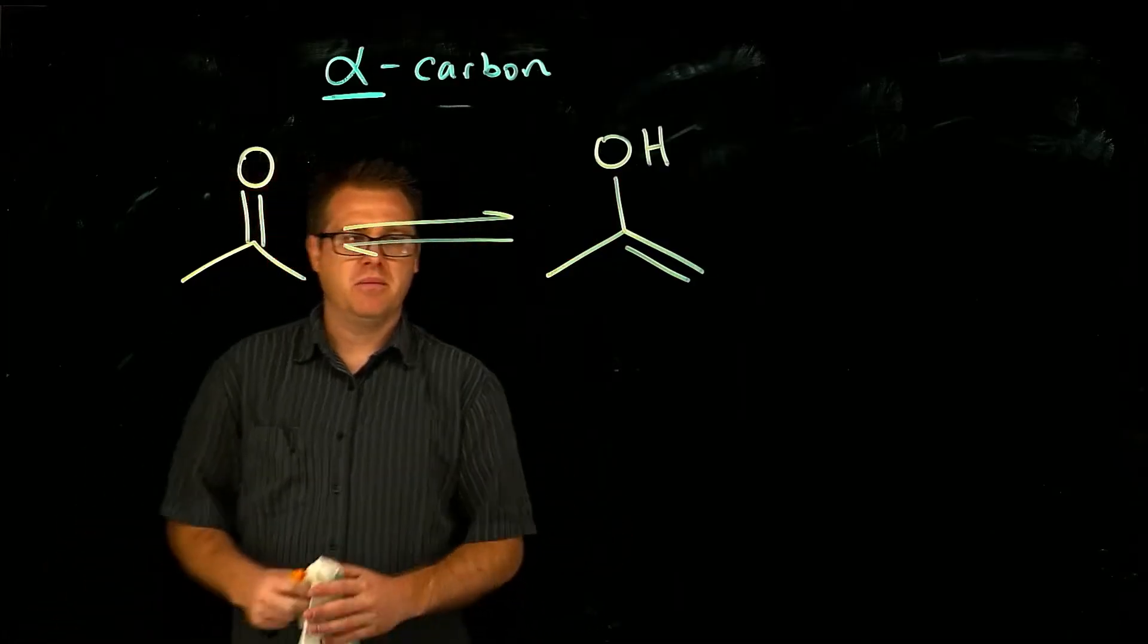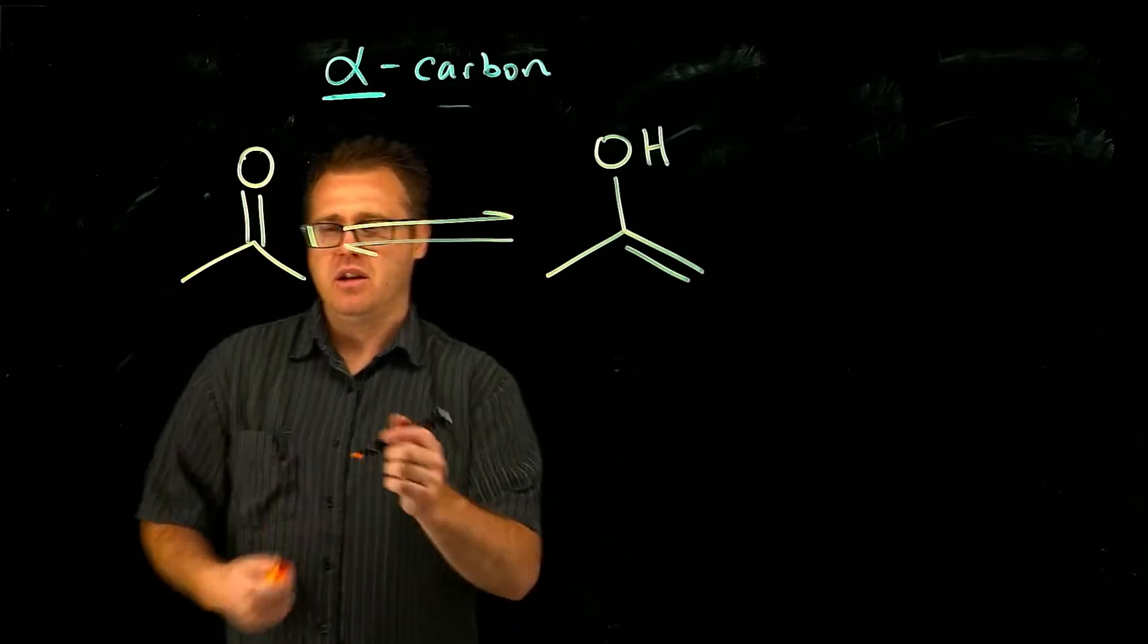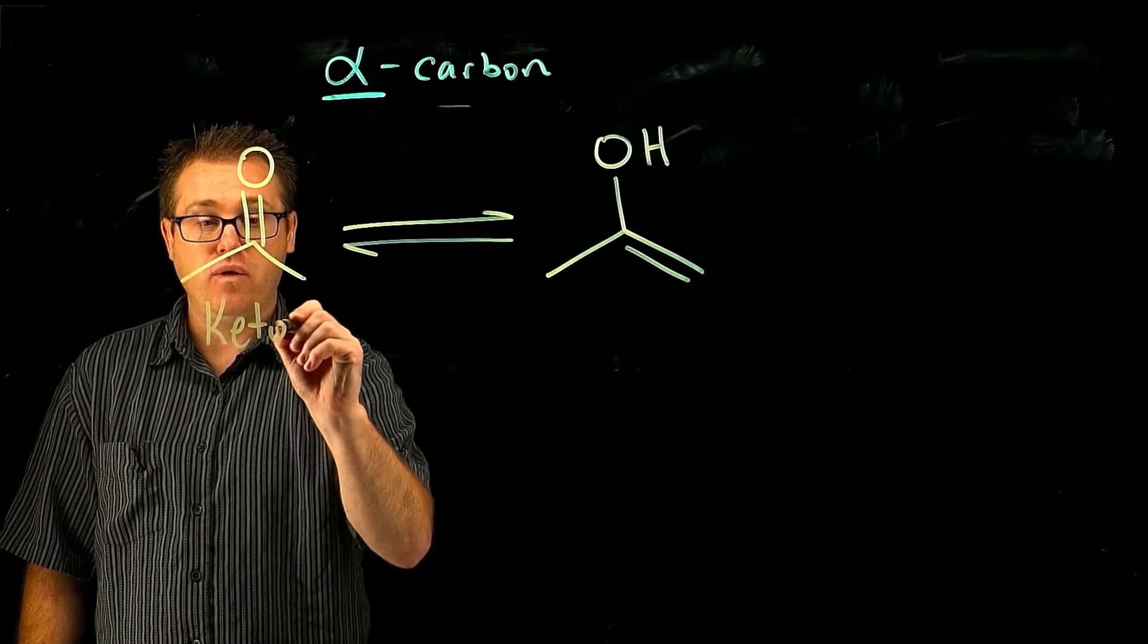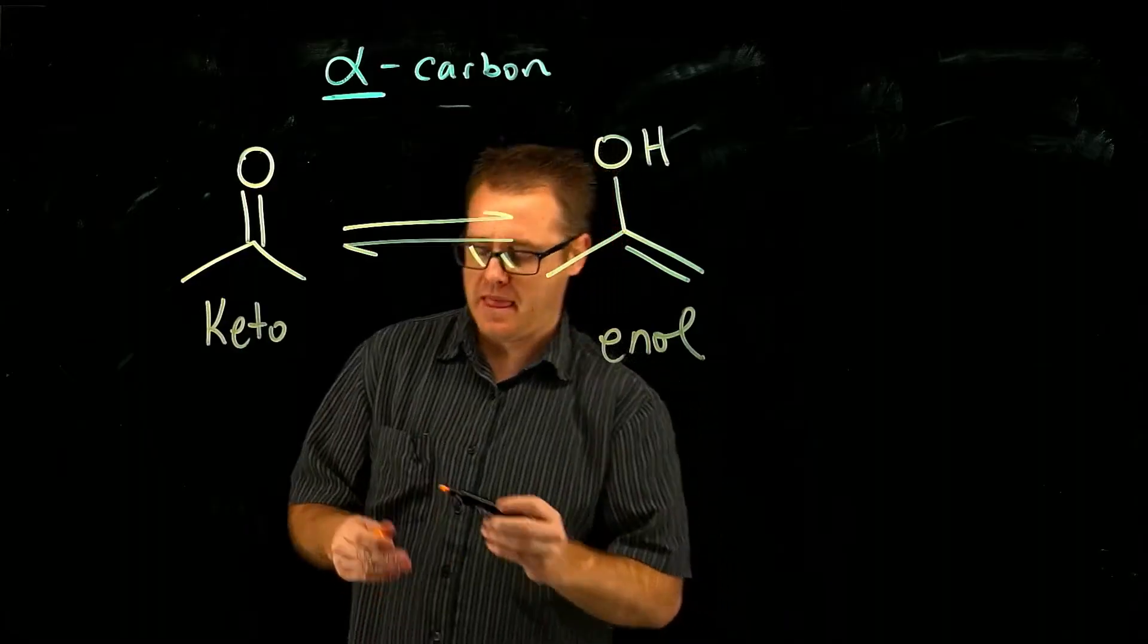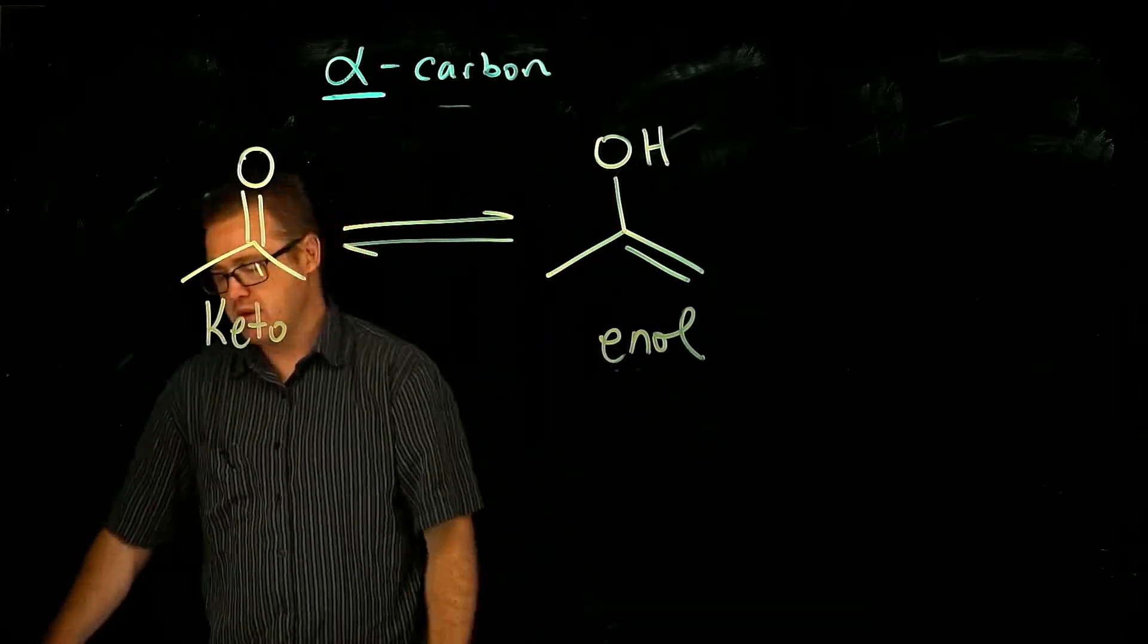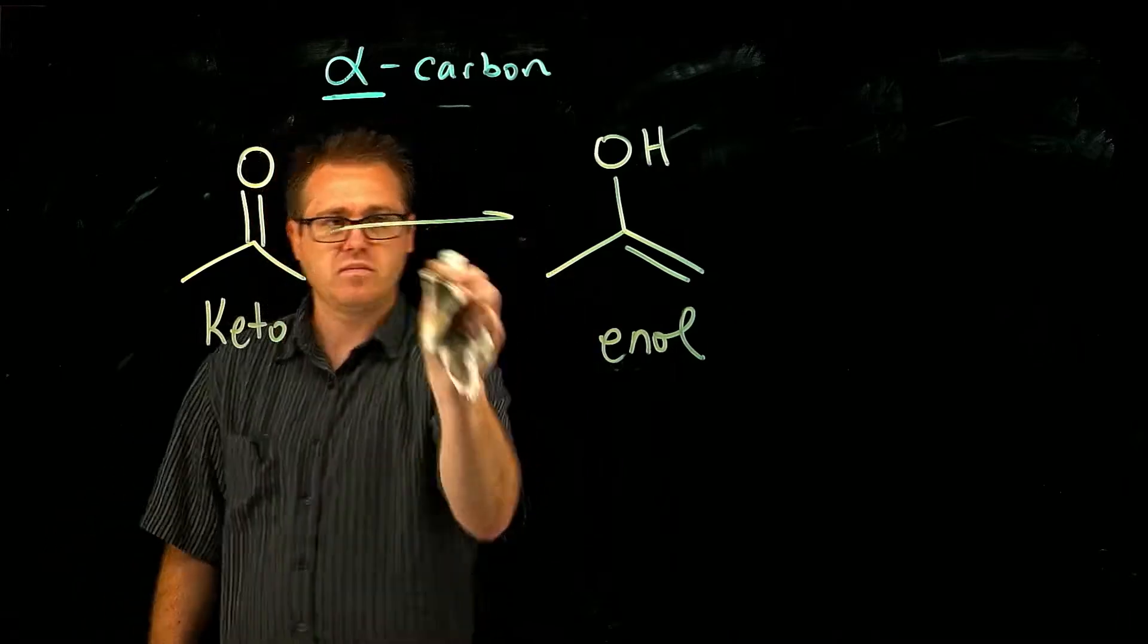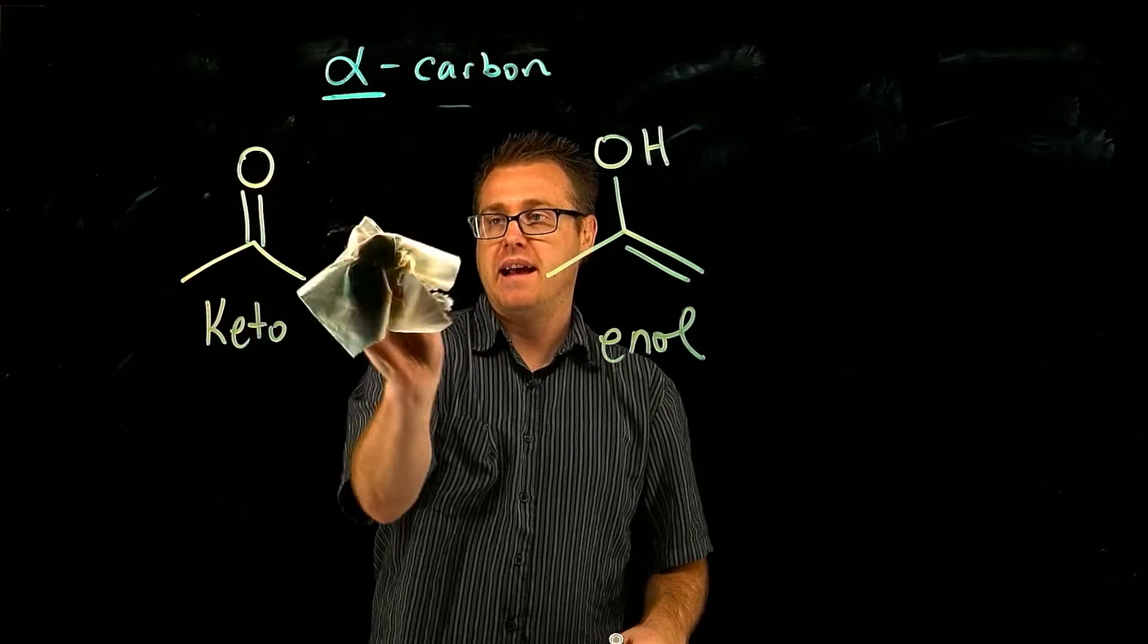So at equilibrium, which one is favored? Typically, instead of calling this a ketone, we call this a keto form, and this the enol form. And that equilibrium, in most situations, it is going to be the keto form that is favored.